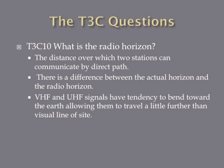What is the radio horizon? The radio horizon is the distance over which two stations can communicate by direct path. It's important to know that the radio horizon and the actual horizon are two different things. VHF and UHF signals especially have a tendency to bend with the earth a little bit, which allows them to travel a little bit farther than the actual line of sight or the actual visual horizon. A direct path is communication between two stations that does not bounce off the ionosphere — it's essentially line of sight.